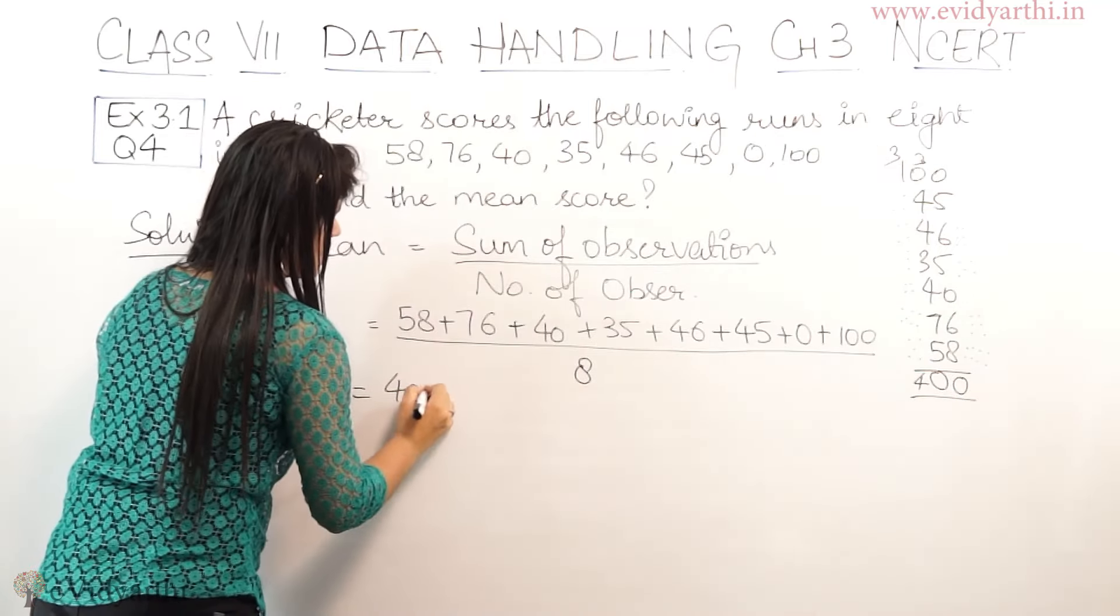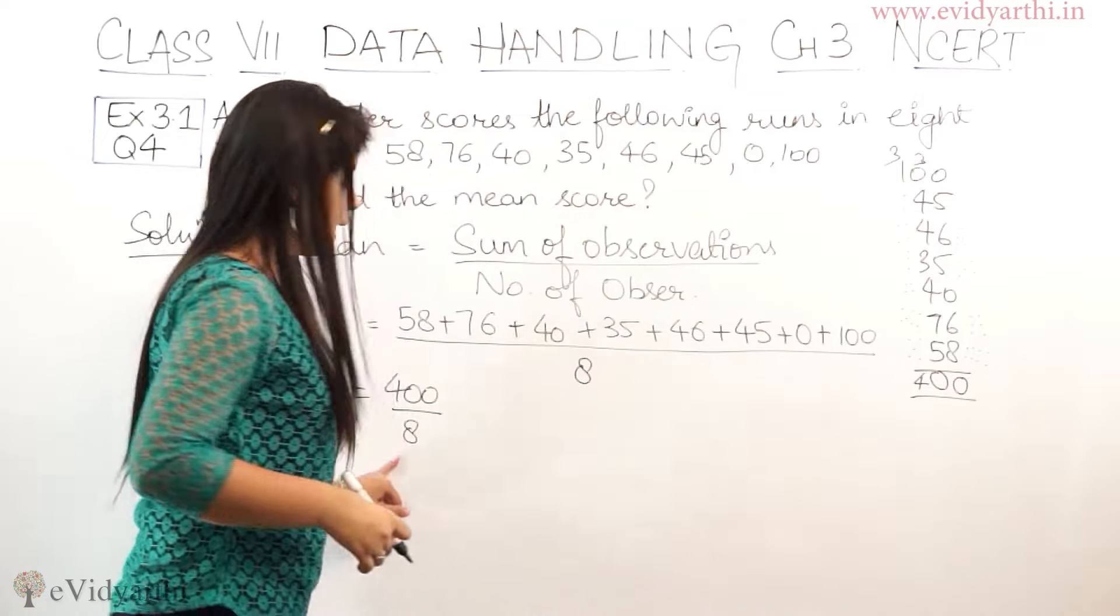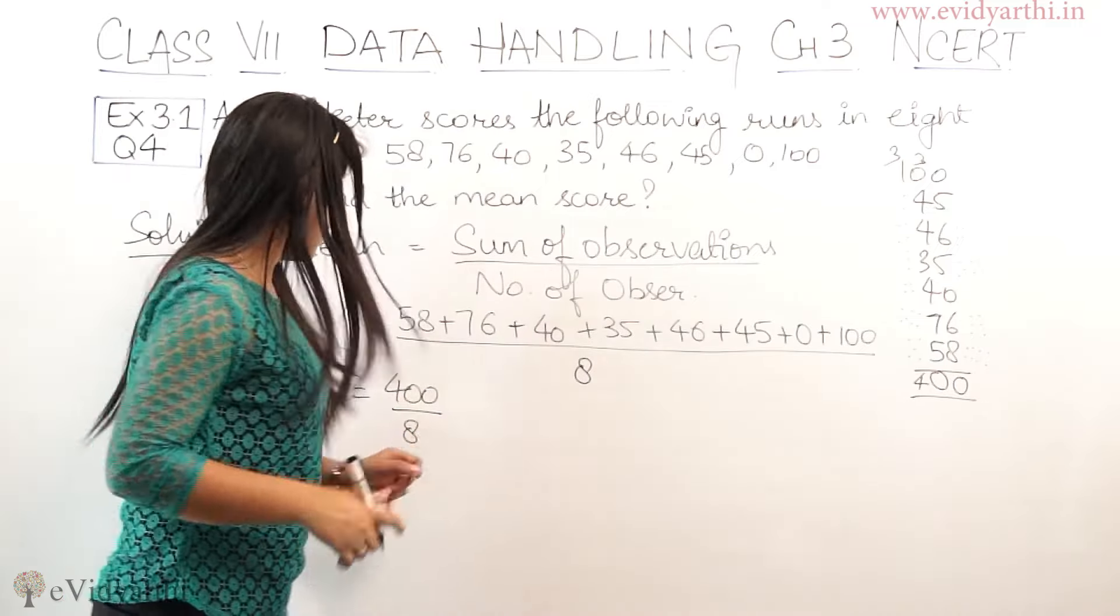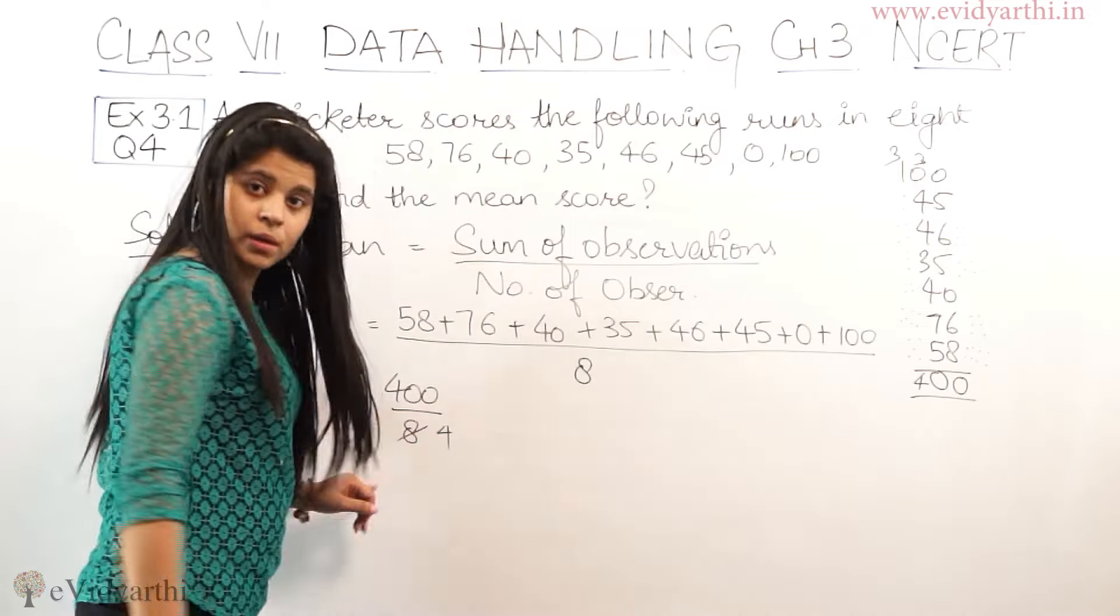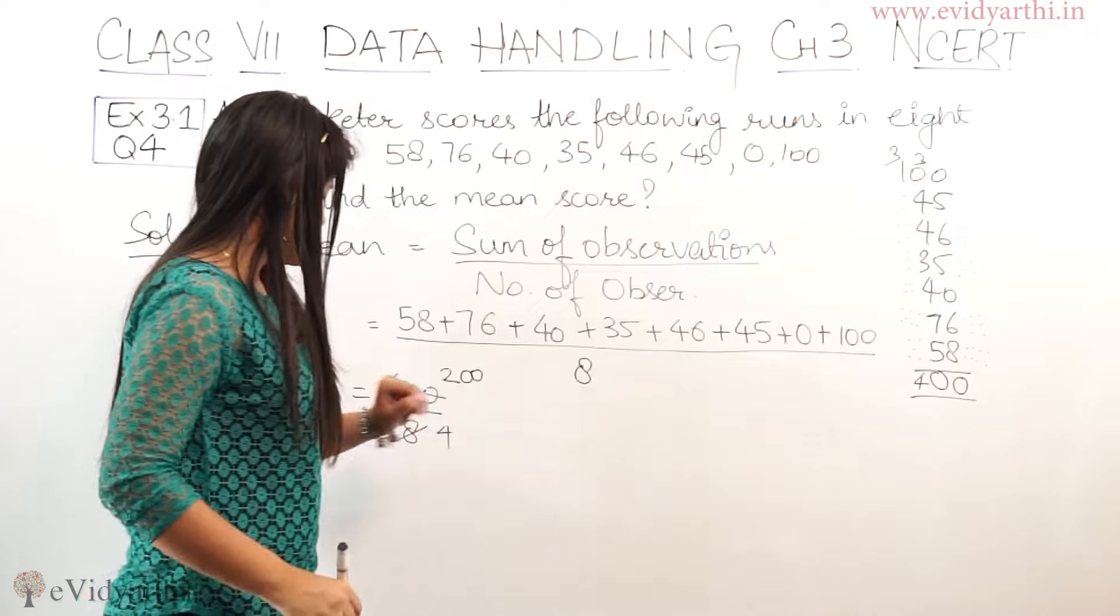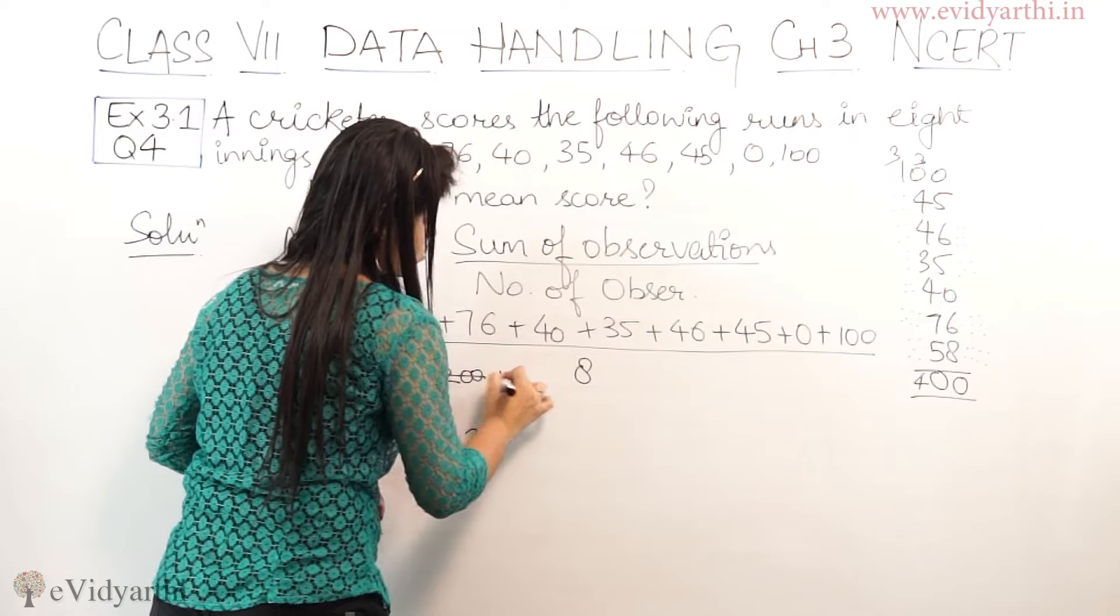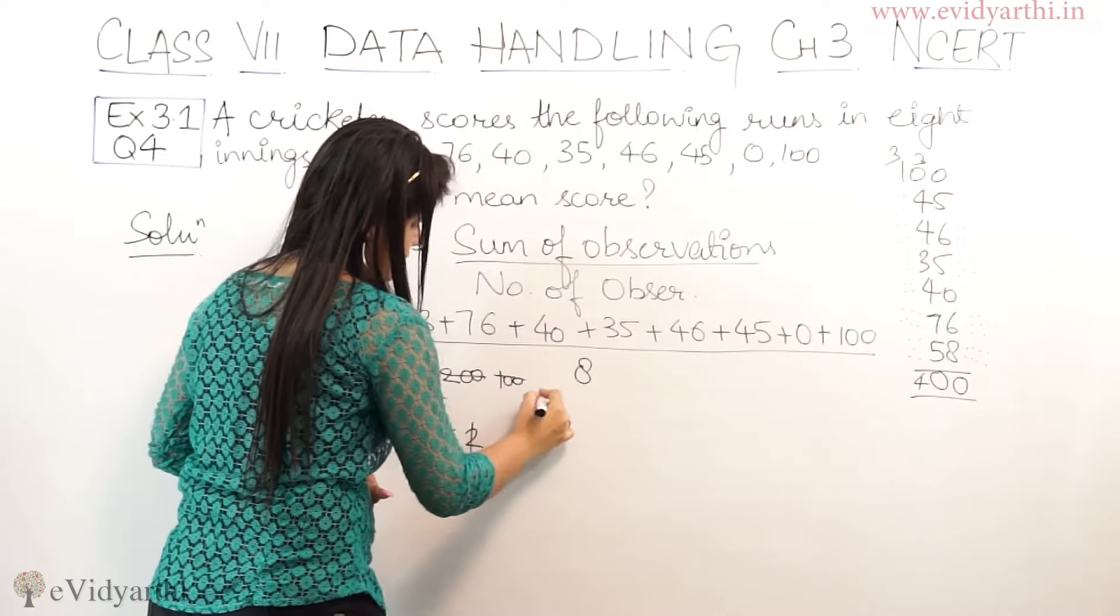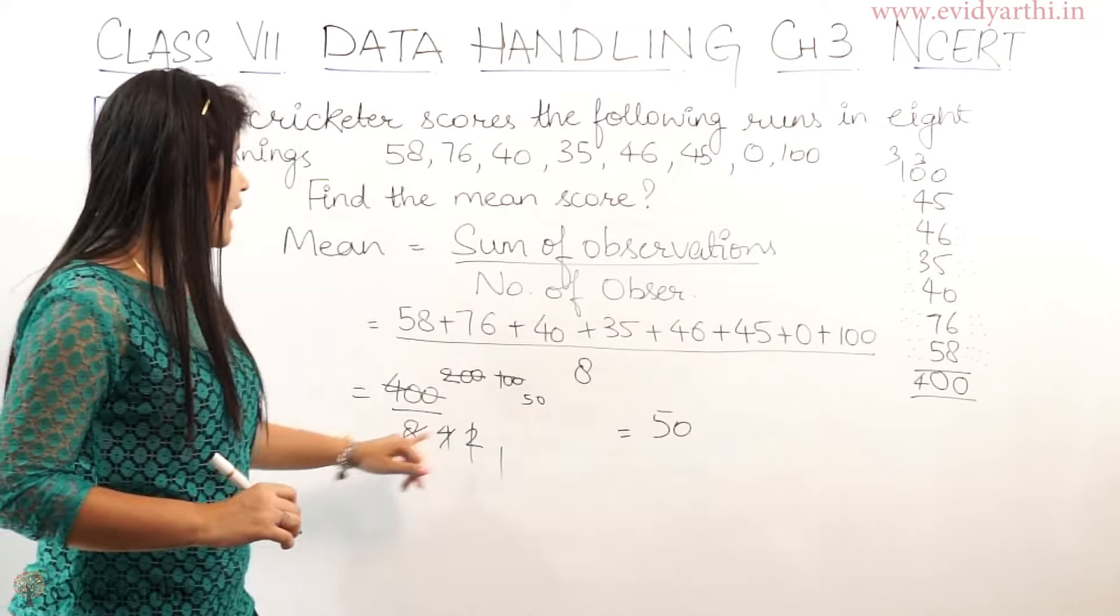So the sum is 400 upon 8. You can directly divide using the 8 times table: 8 times 5 is 40. Otherwise you can start with 2: 400 divided by 2 is 200, then 200 divided by 2 is 100, then 100 divided by 2 is 50.